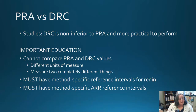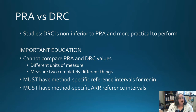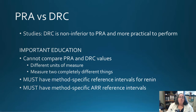Studies are now showing that DRC is non-inferior to PRA and more practical to perform. While PRA still holds gold standard status, that designation is rarely updated quickly. You must have method-specific reference intervals for renin and method-specific aldosterone-renin ratio reference intervals, because one measures actual renin concentration while the other measures activity — they are measuring two completely different things. Physician education is essential when switching from PRA to DRC.